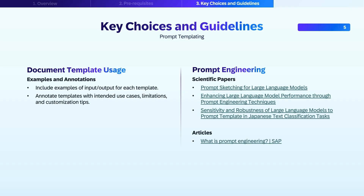To make your templates truly reusable, document their usage clearly. Include examples showing both the input and expected output for each template. Annotate your templates with helpful context — when to use them, known limitations, and tips for customizing them. This not only saves time for others but also reduces the risk of misusing or duplicating templates. We've also curated a selection of scientific papers and articles for further exploration of prompt templating.